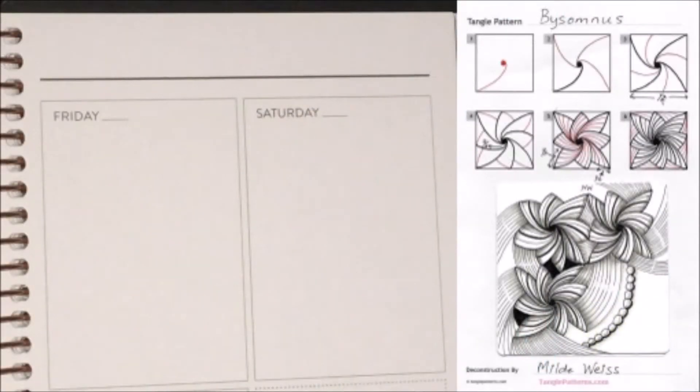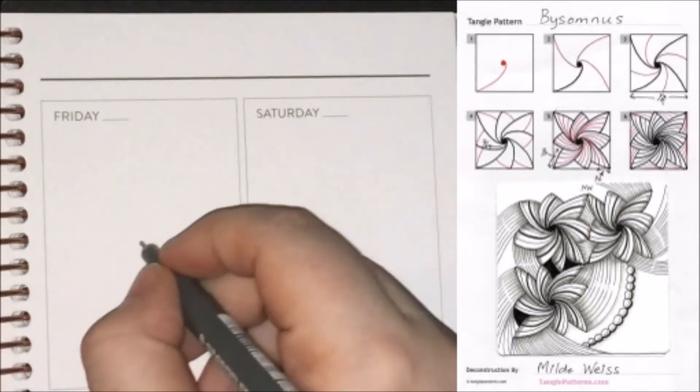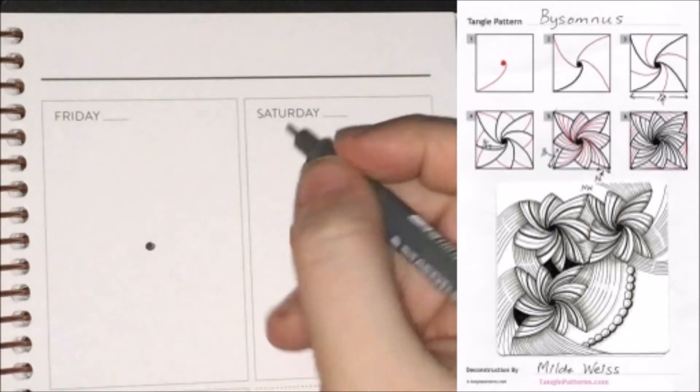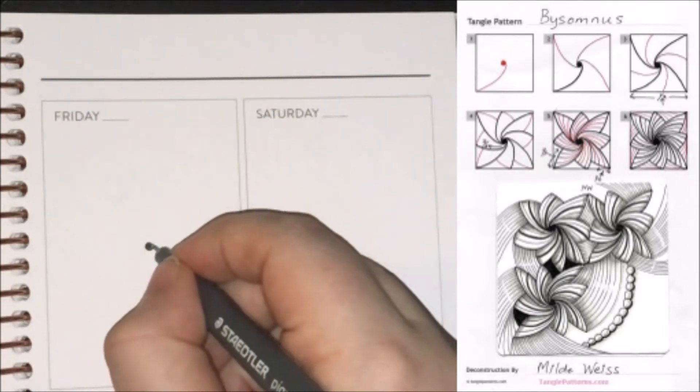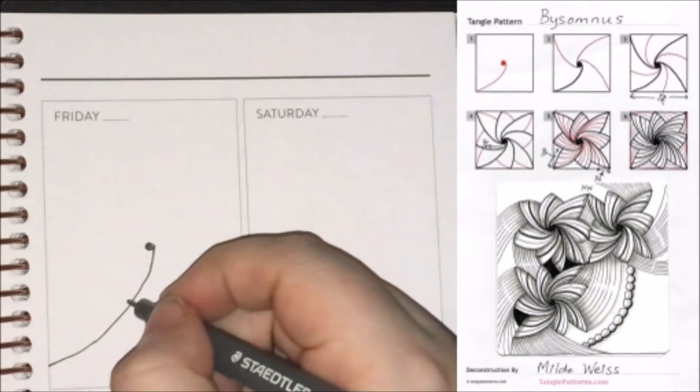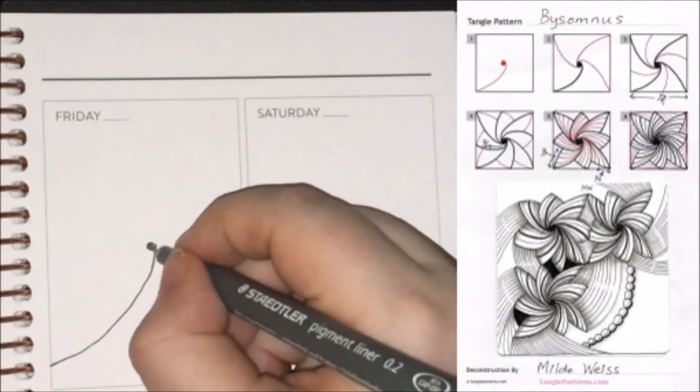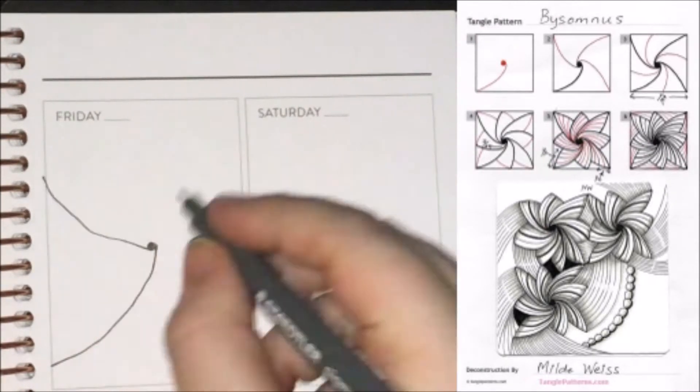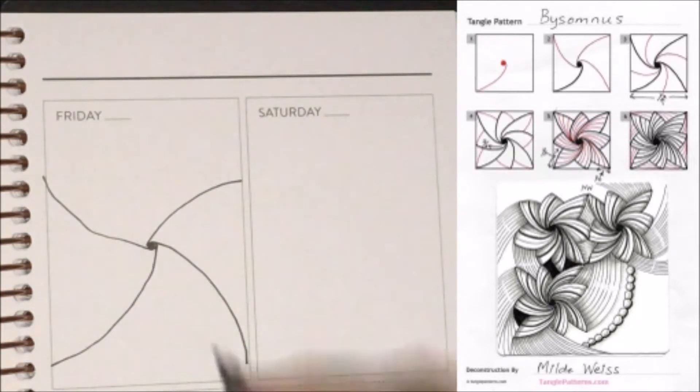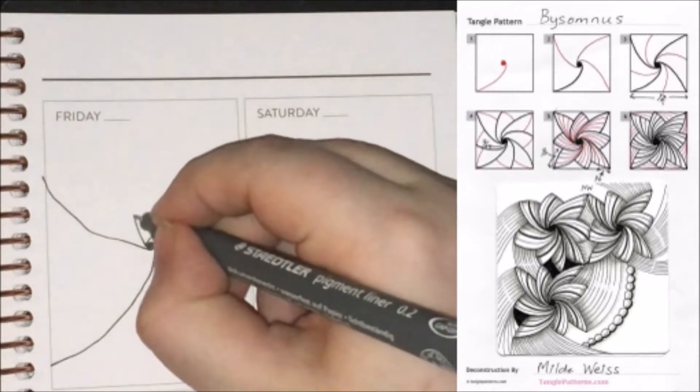The fifth tangle I have for you all today is called Bisomnus and it's by Melda Weiss. And the way you're going to get started with this one is you're going to start by making a dot in the center and then from this dot we're going to spiral outwards into what is typically the four corners. And we're actually also going to divide these areas in half.